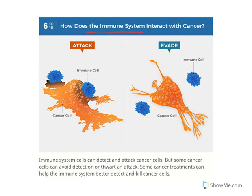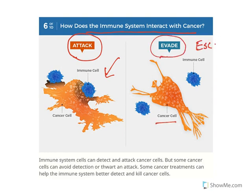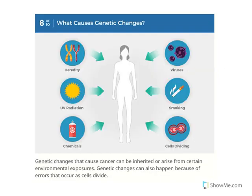How does the immune system interact with cancer? Normally, the immune system attacks abnormal cell behavior. The basic job of the immune system is to protect humans from infections like bacteria and viruses. When there is an abnormality in human cells, immune cells will attack — but some cancerous cells evade or escape the immune system attack and continue to multiply. This is the major problem with cancer.